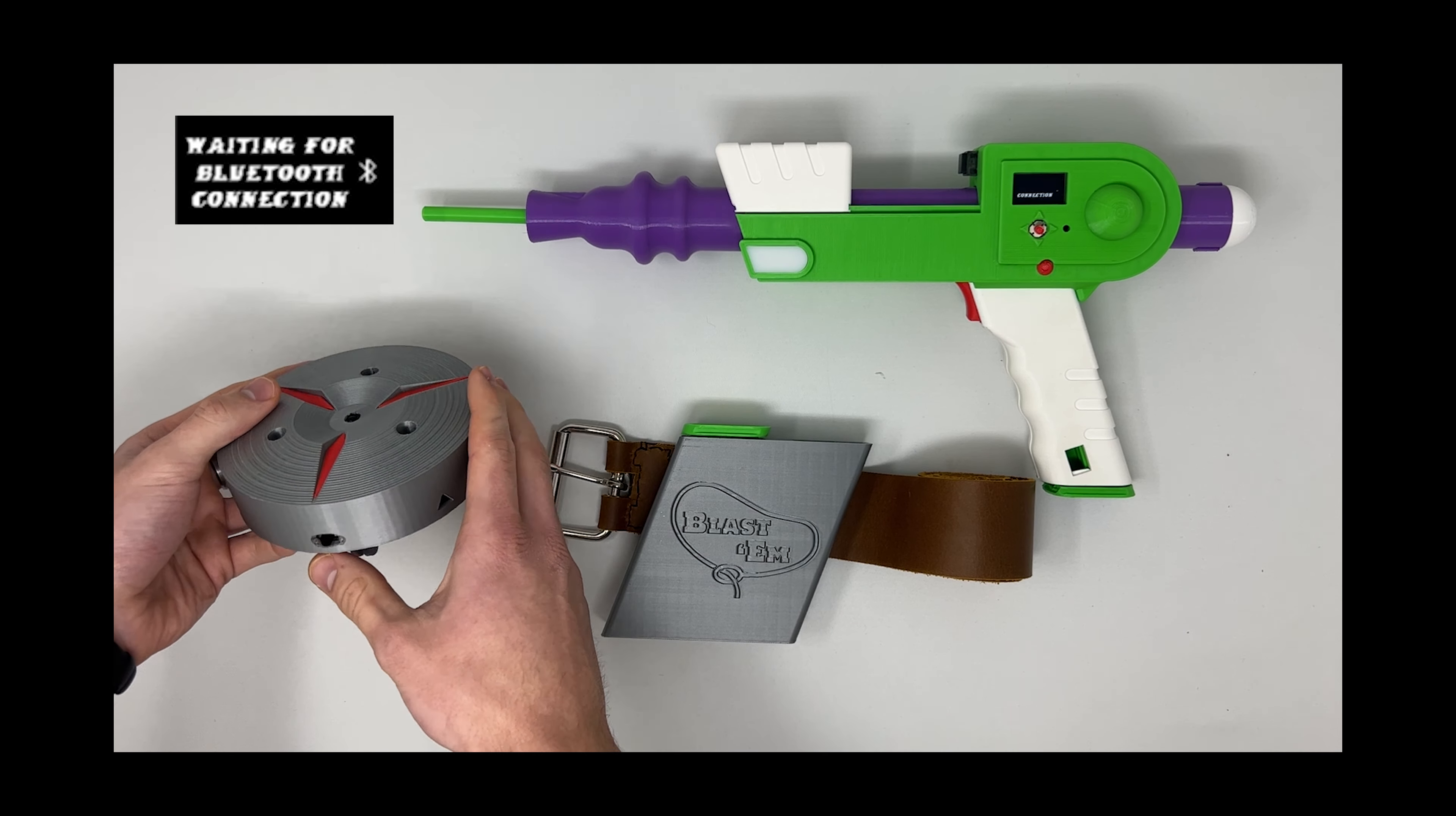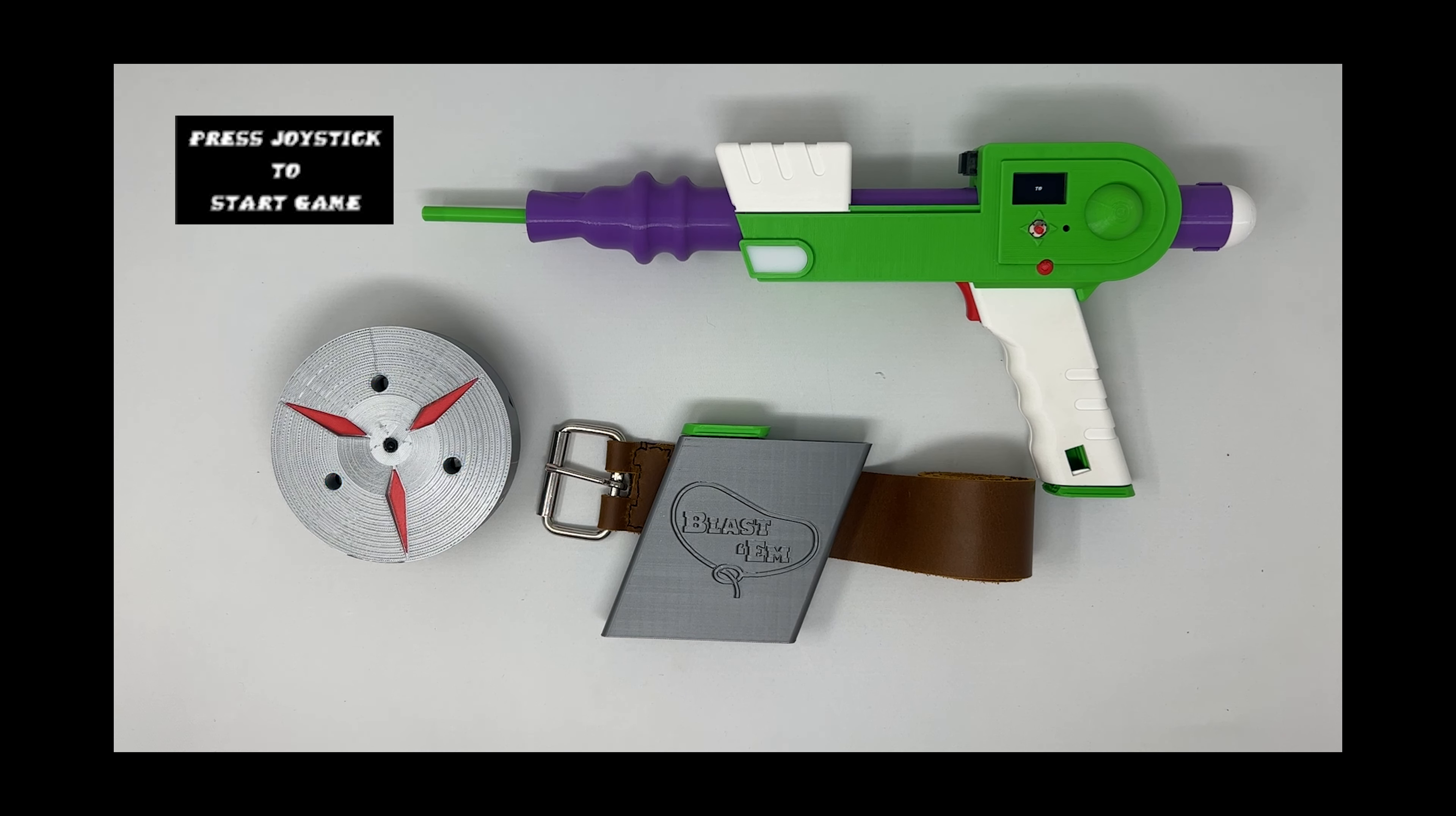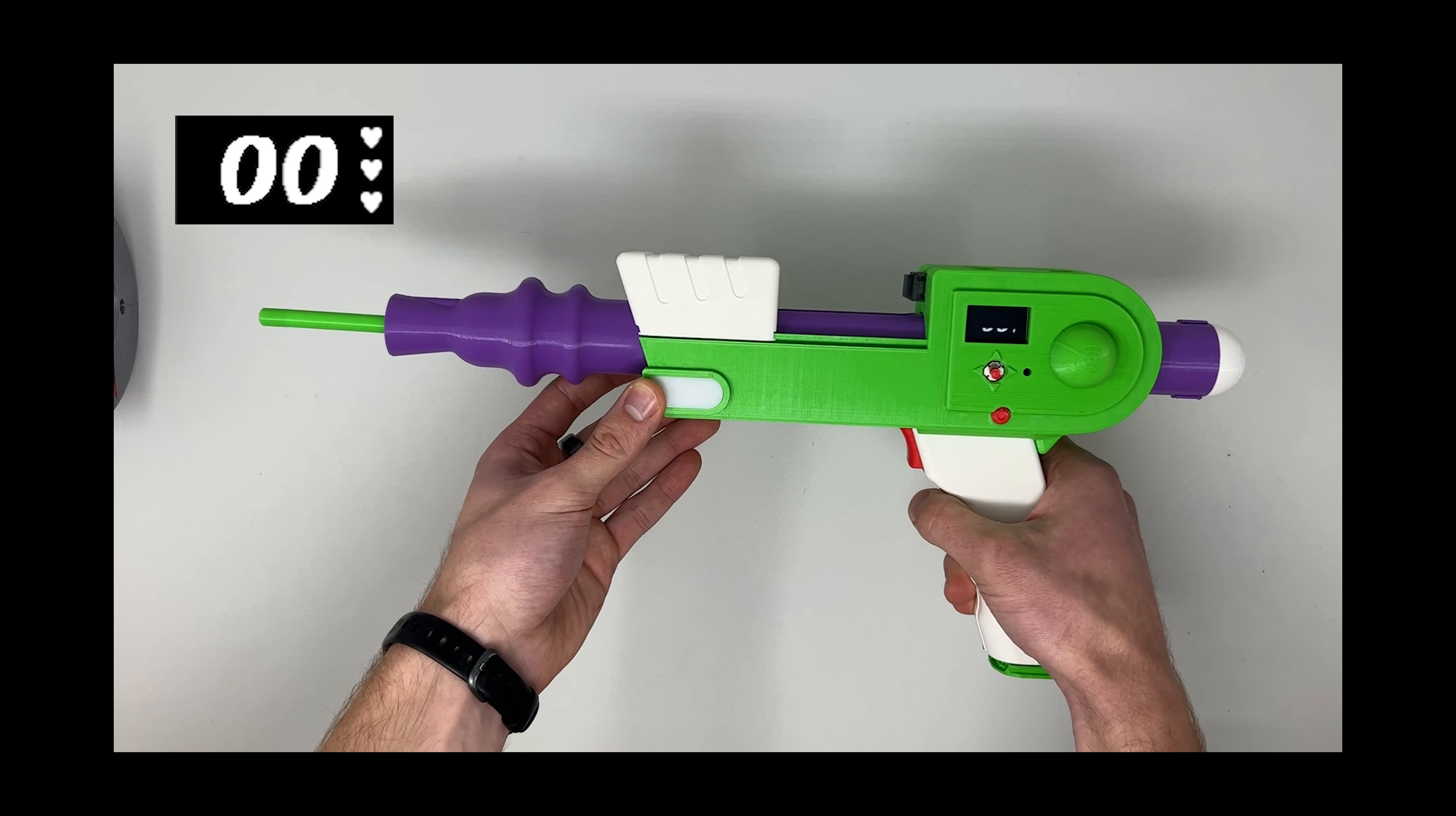Turn the power on to the target using the switch at the bottom. The lights will temporarily flash yellow, then turn blue once it gets that Bluetooth connection. Then the screen on the blaster will prompt you to press the joystick in to start the game.